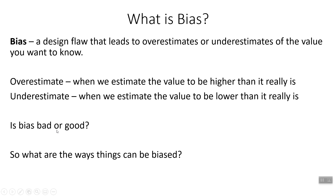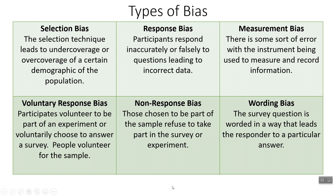So if we're getting the wrong answer, that is fairly bad — not something we want to happen. So what are ways things can be biased and how can we possibly fix these biases? Our six types of bias covered on the AP exam — first up, selection bias. It's when our selection technique leads to undercoverage or overcoverage of a certain demographic. If three-fourths of our sample is men, we get undercoverage of women and overcoverage of men — that is selection bias.